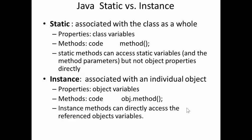For example, there are properties that are associated with the class. We call them class variables. Methods or code can also be associated with the class as a whole. Static methods can access static variables, but not object properties directly.